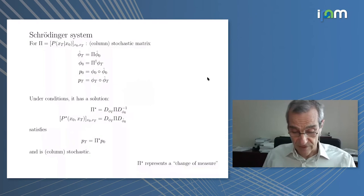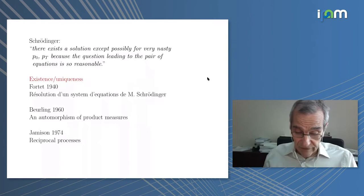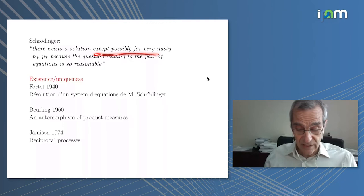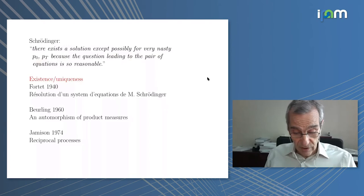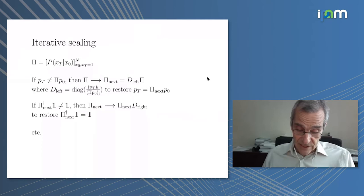Very briefly, Schrödinger didn't have a proof of this but he said the solution exists except for some nasty marginals because the solution is so natural and makes sense. It took a long time for the theory to be completed and for the problem to be understood in this modern way as a large deviations problem.